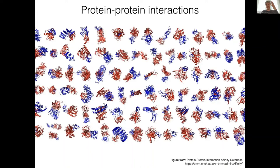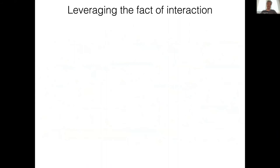Moving on to protein-protein interactions — this is a more challenging problem, as alluded to a few times. The first reason is that there's less structural data to work with. The second reason is that protein-protein interactions are much more evolvable and variable, so there's less of a co-evolution signal that can be picked up. Since most AI methods rely heavily on co-evolution to make predictions, it's not a surprise that performance for protein complex prediction is not as good.